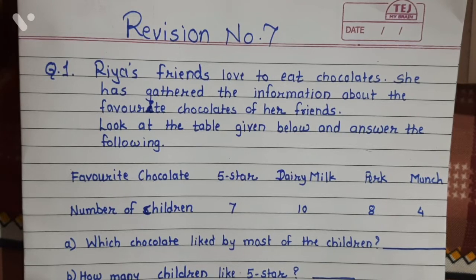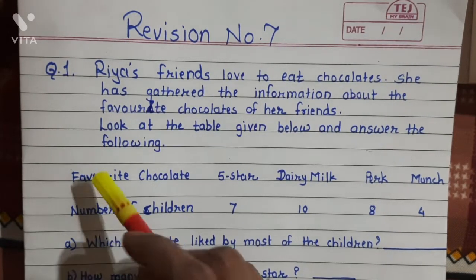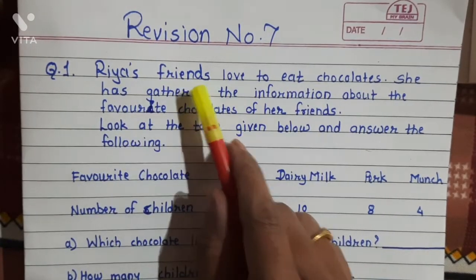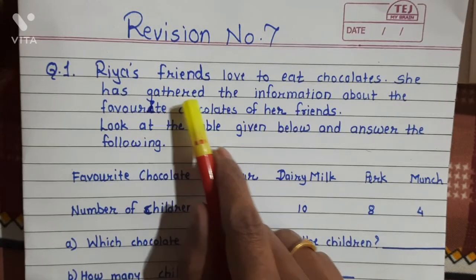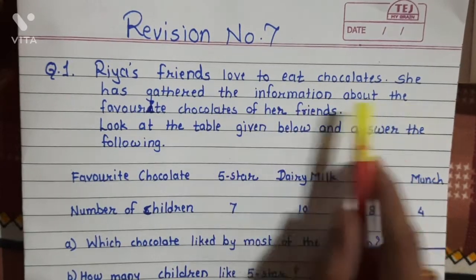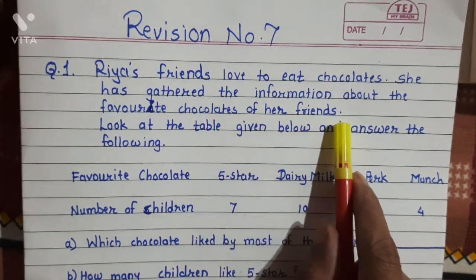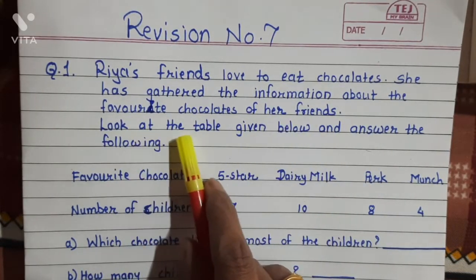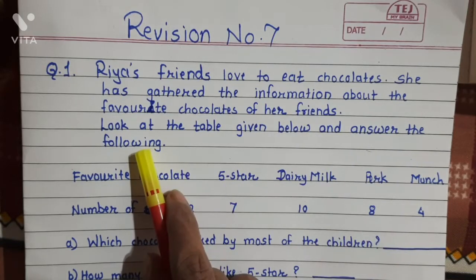Here I will read questions for you. You have to see it properly and write down in your notebook. Question number 1: Riya's friends love to eat chocolates. She has gathered the information about the favorite chocolates of her friends. Look at the table given below and answer the following.